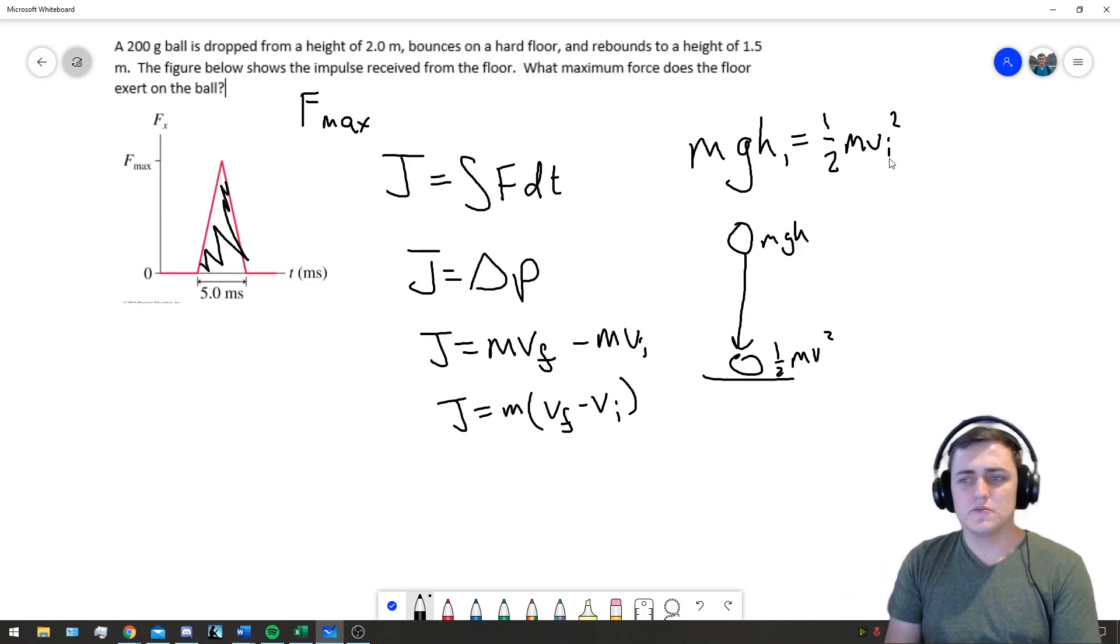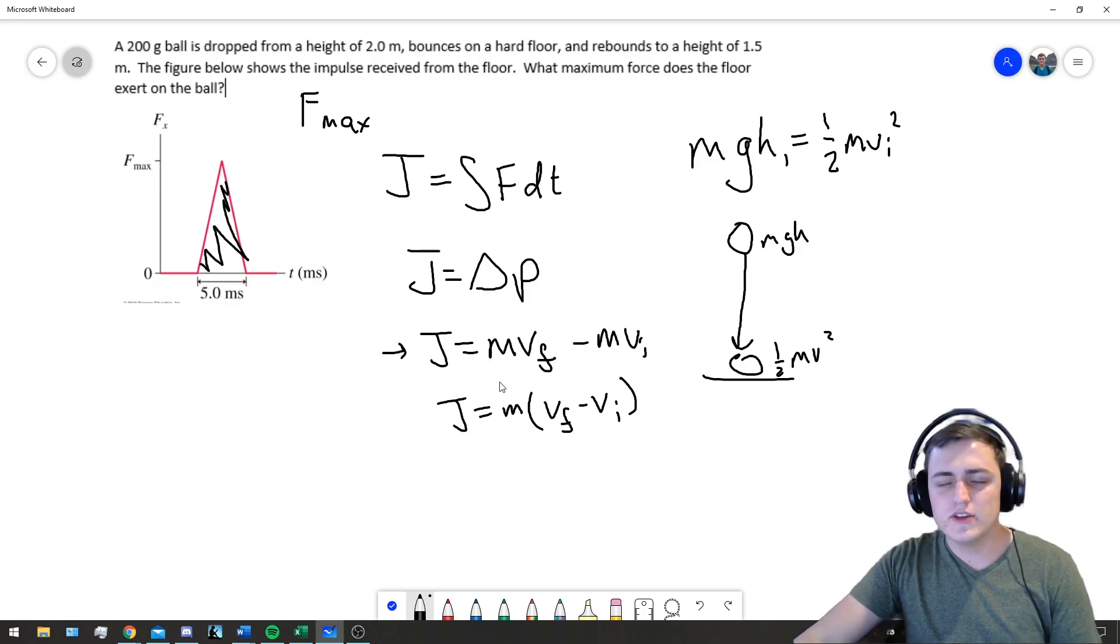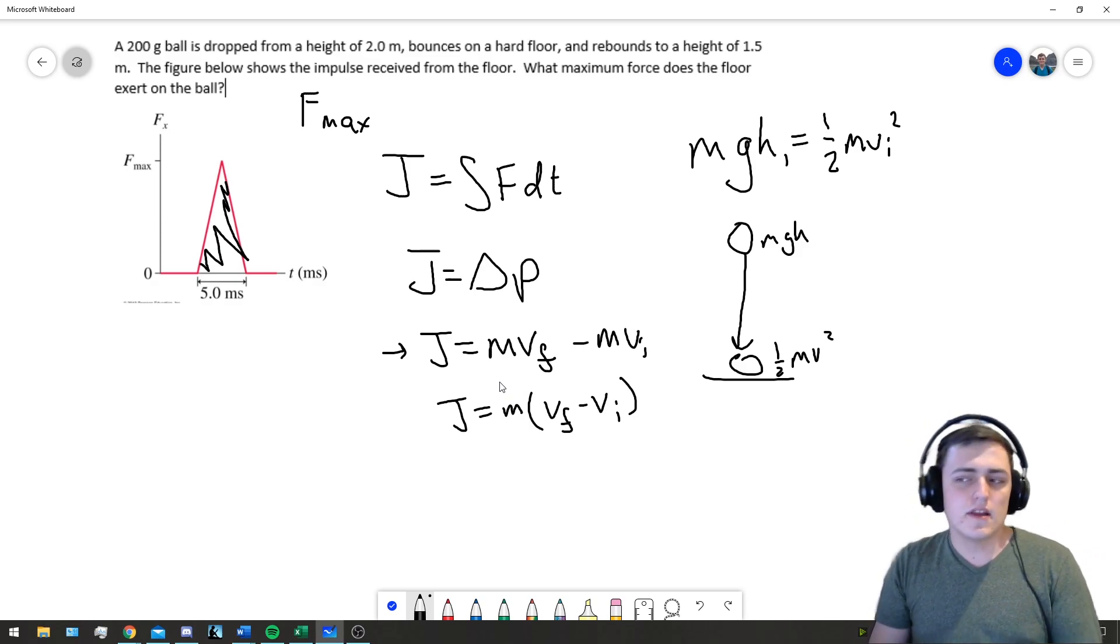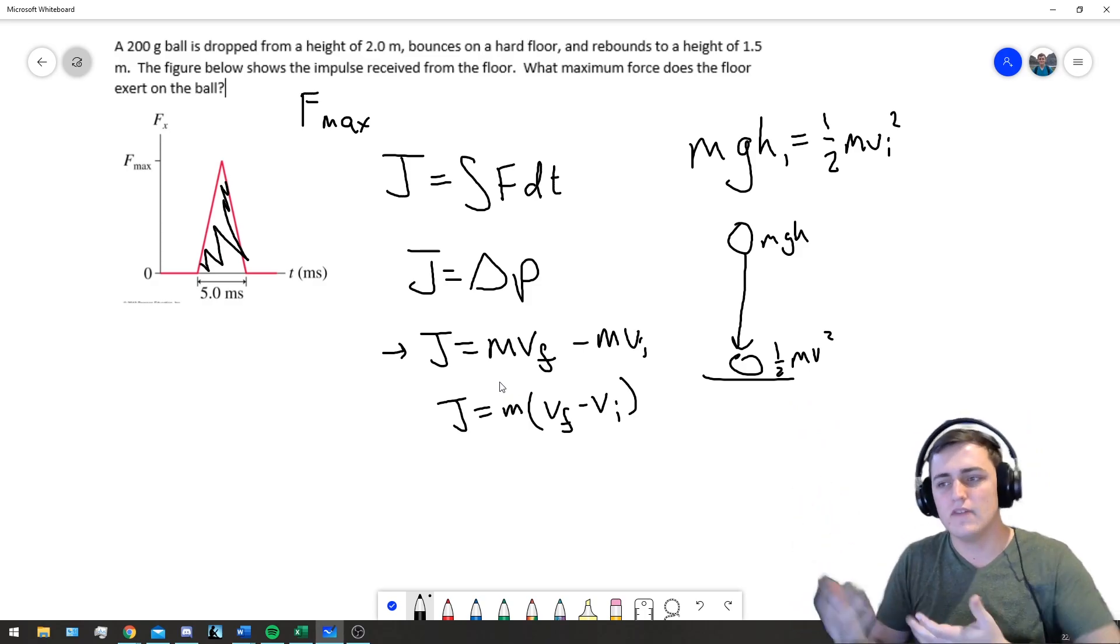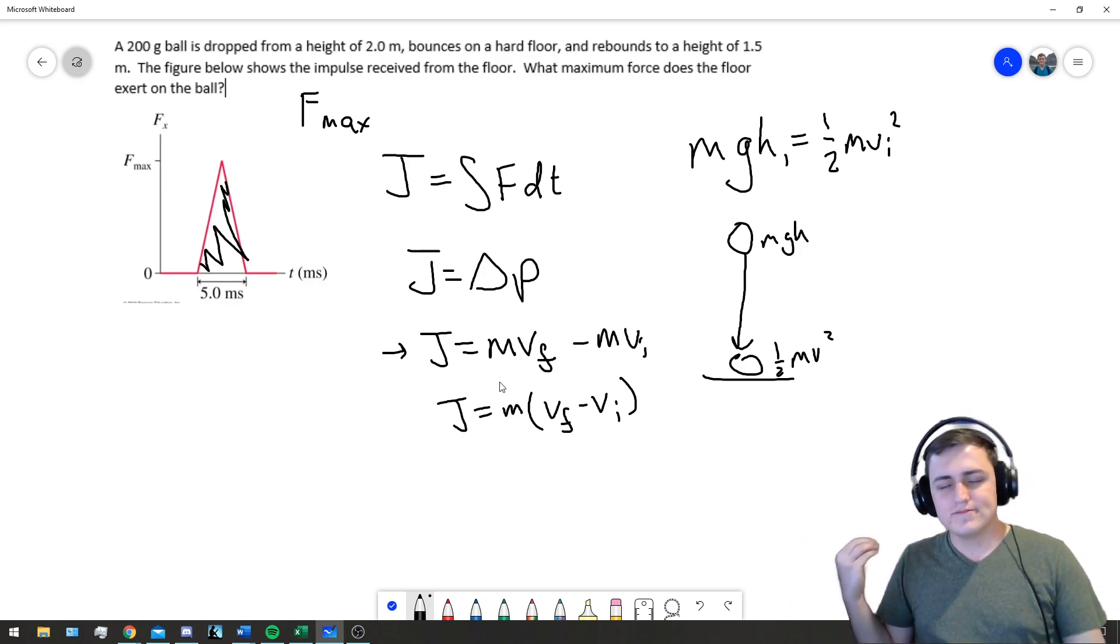Now it's the initial because we're looking at the start of our impulse. Initial and final is relative to our collision. It doesn't have to do with dropping up or rising back up, whether it's falling down at the beginning or coming back up.